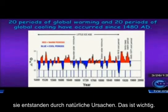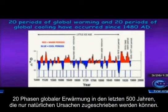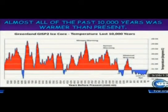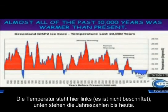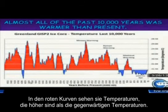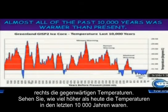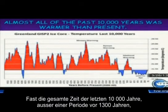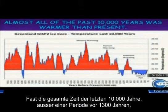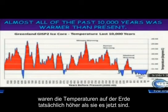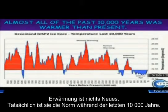They were caused by natural causes. That's important — 20 periods of global warming can only be ascribed to natural causes in the last 500 years. If we go back even farther, 10,000 years, this is temperature on the left-hand side — sorry, it's not labeled — and these are years before present on the bottom. The red curve shows temperatures that are higher than present temperatures. Look how much of the last 10,000 years temperatures have been higher than they are now. Almost all of the last 10,000 years, except for the period beginning about 1,300 years ago, temperatures on Earth were actually warmer than they are right now. Warming is nothing new; as a matter of fact, it's the norm for the last 10,000 years.